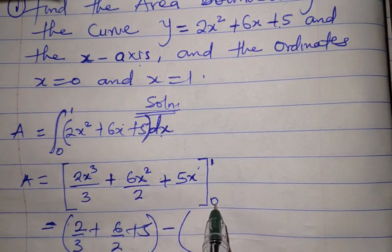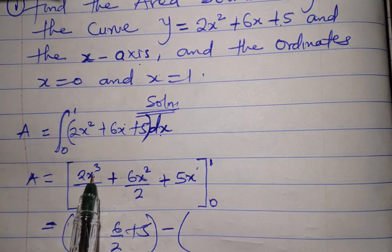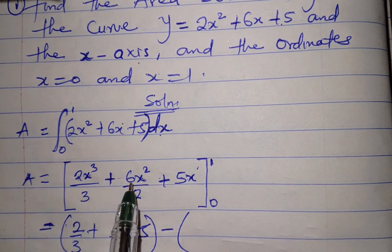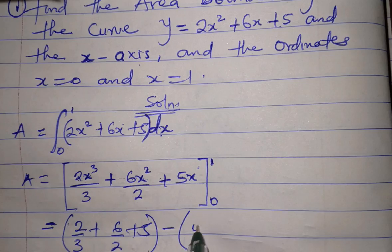Minus - now let's put 0. When we substitute 0, everything becomes 0: 2 times 0 is 0, 6 times 0 is 0, 5 times 0 is 0, so there's nothing here.